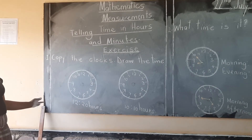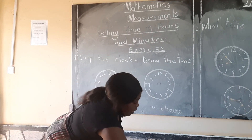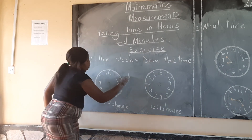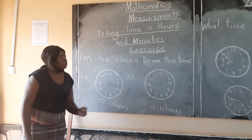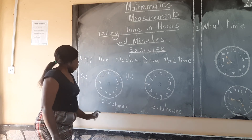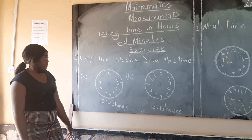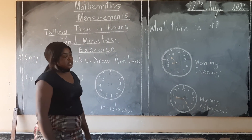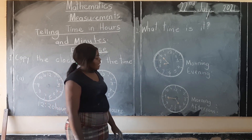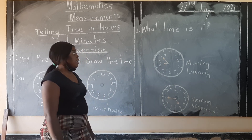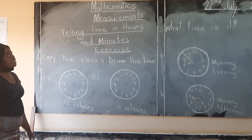The exercise we are going to do has two questions. The first question is: copy the clocks and draw the time. We have A and B — two clocks. You are going to draw the time given: 12:30 hours and 10:10 hours. The second question is: what time is it? What time is this in the morning and evening? And also, what time is this in the morning and in the afternoon?